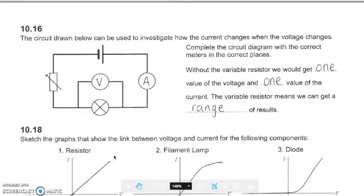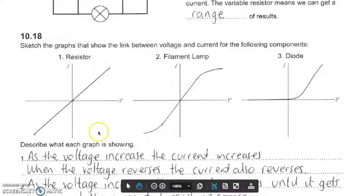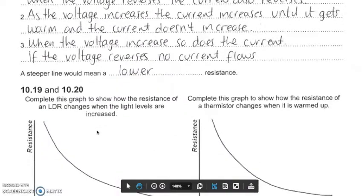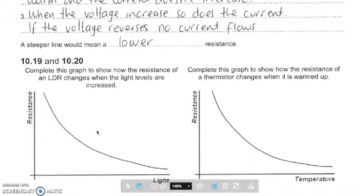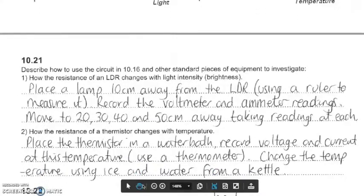Then we can use V = I × R to give us the resistance. We jot down the resistances and essentially we should get a graph that resembles this. Obviously the light levels will be dependent on the distance, so that's how we can do it.